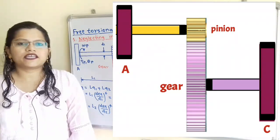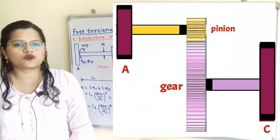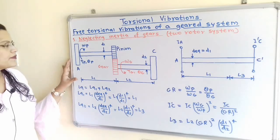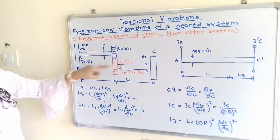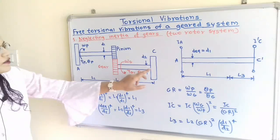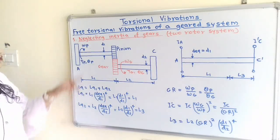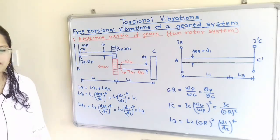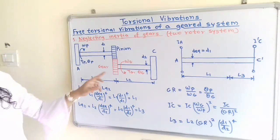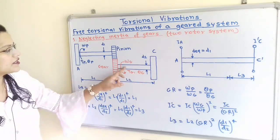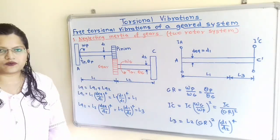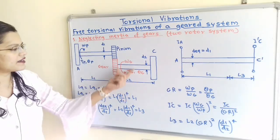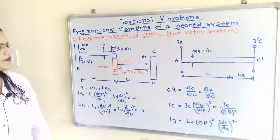When we neglect the inertia of gears, the system is treated as a two-rotor system. Observing the diagram, motion is transmitted through the pinion-gear system from rotor A to rotor C. The first shaft connects rotor A and the pinion with diameter D1, and the second shaft connects the gear and rotor C with diameter D2. The first shaft has length L1 and the second shaft has length L2.